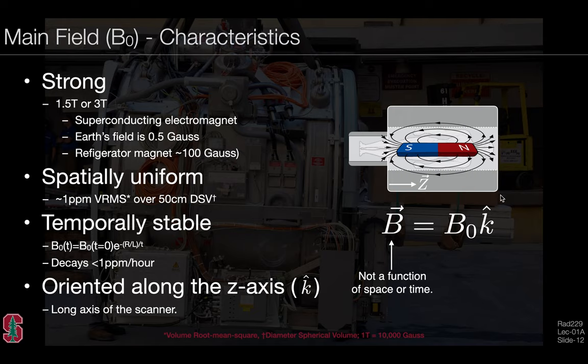Mathematically, we could write a very simple expression to describe the external B0 field: B0 in magnitude oriented along the k hat direction. Note that this is explicitly not a function of space nor time.